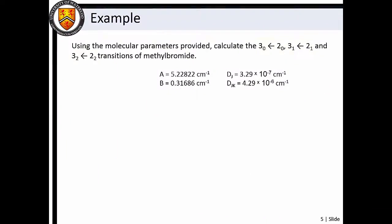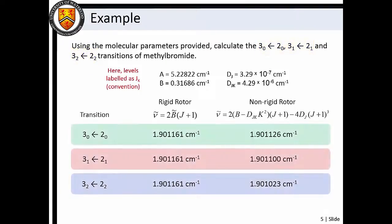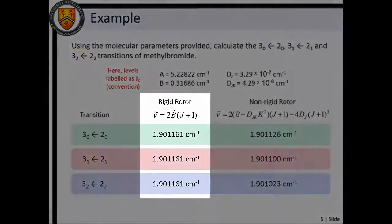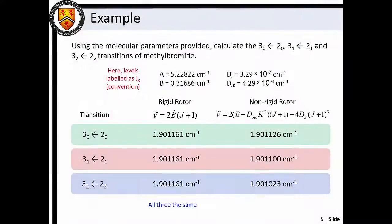Let's consider methyl bromide and calculate the J = 2 to 3 transitions, which are labeled as Jₖ here. If we use the rigid rotor approximation, all three transitions occur at exactly the same wave number. If we instead use the non-rigid rotor model, we find that the K-dependent term results in a separation or splitting of the three transitions.